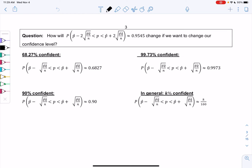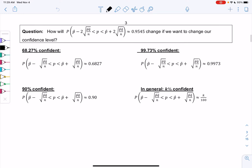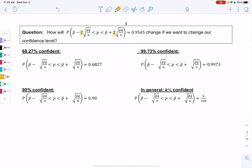Section 8.1. So quick question. How will the probability of p hat minus two standard deviations from p hat to p hat plus two standard deviations change? We're looking at that two standard deviation cutoff and we got a percent of 95.45. How does that change if we want to change our confidence level? We don't always want to be 95.45% confident. So let's look at some examples.